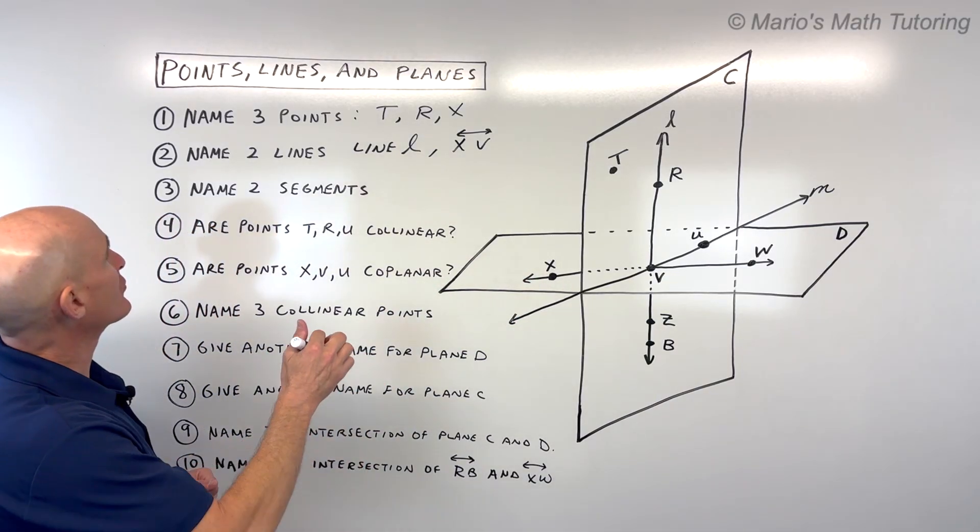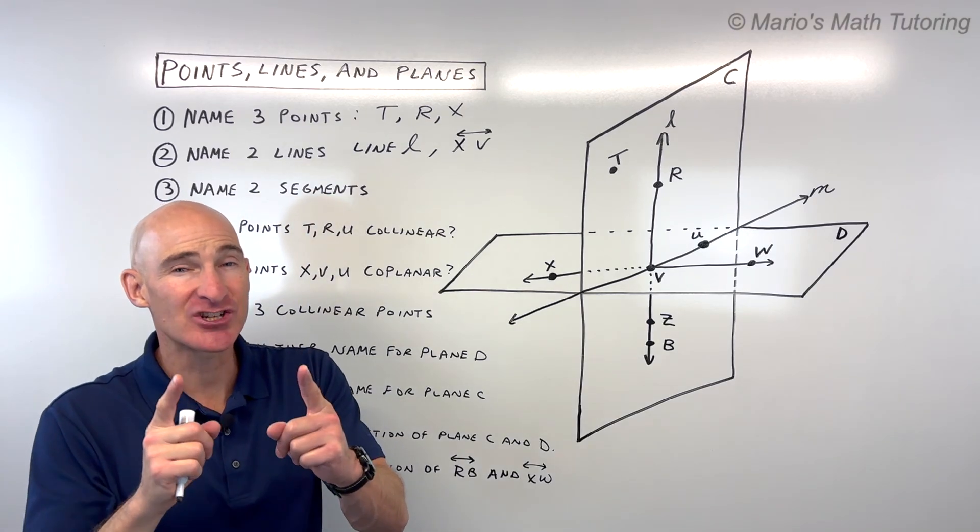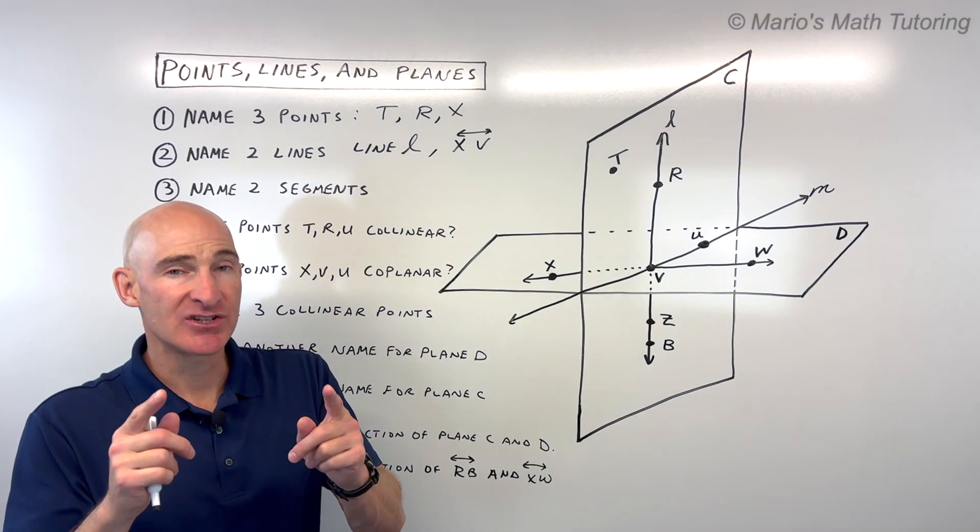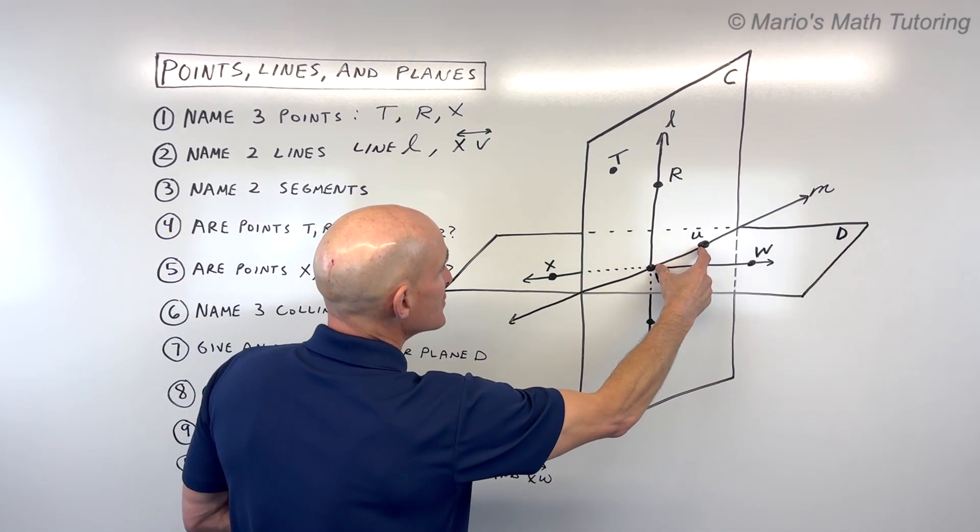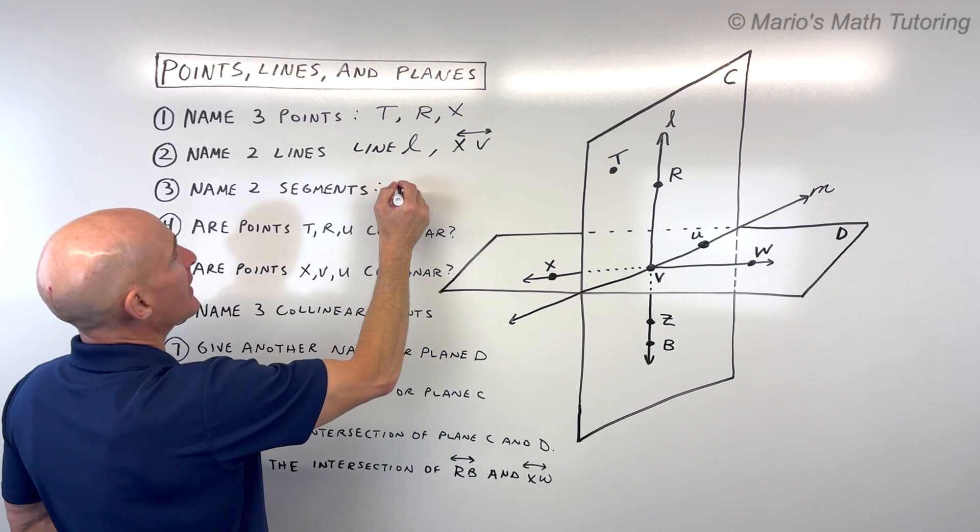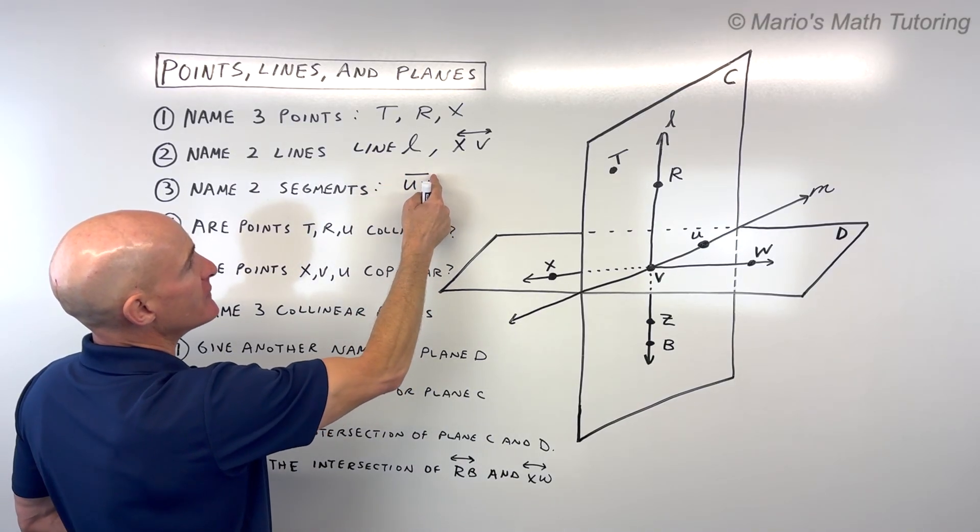Number three says name two segments. A segment is like a section of a line. It has two endpoints, and it's just like a piece of that line. For example, I could say UV, just that little segment right there, and I would put a little bar over here to indicate that U is an endpoint, V is an endpoint.